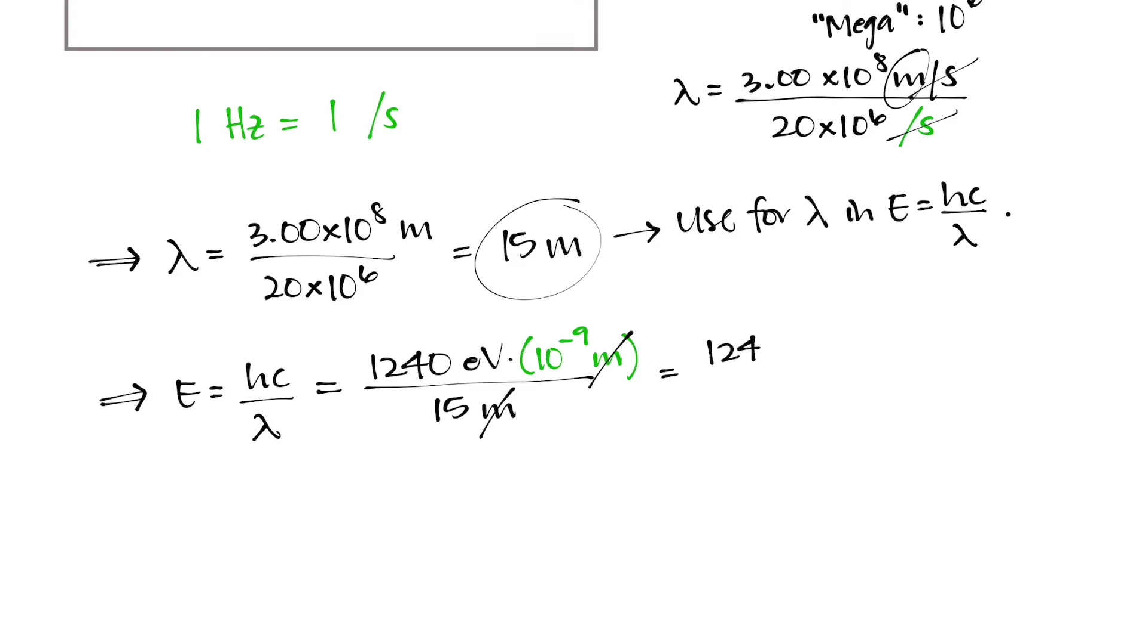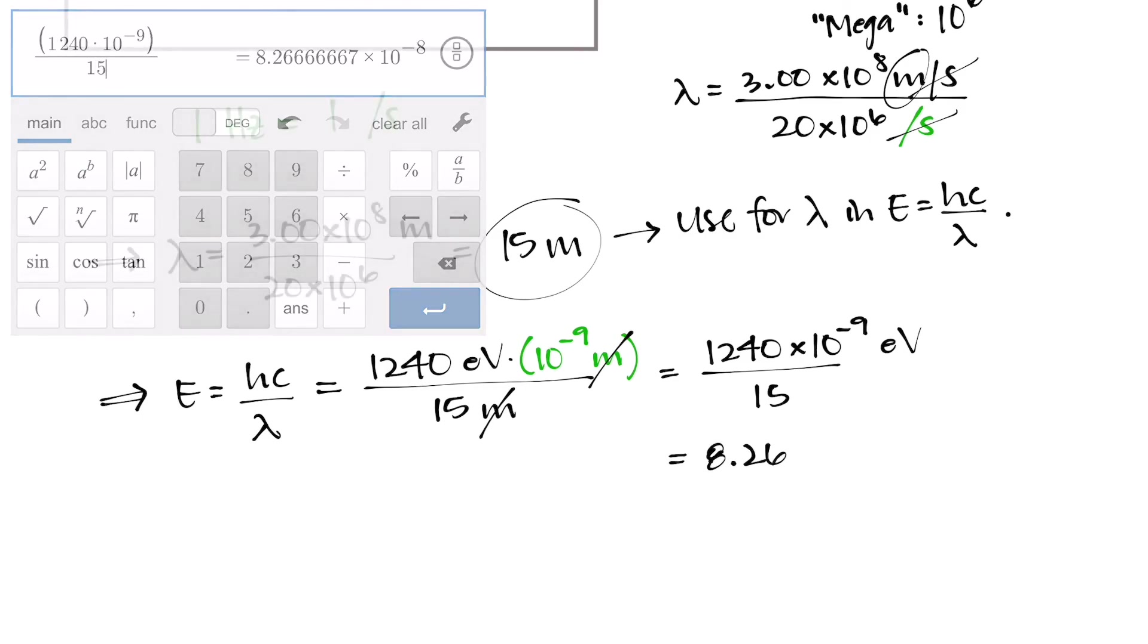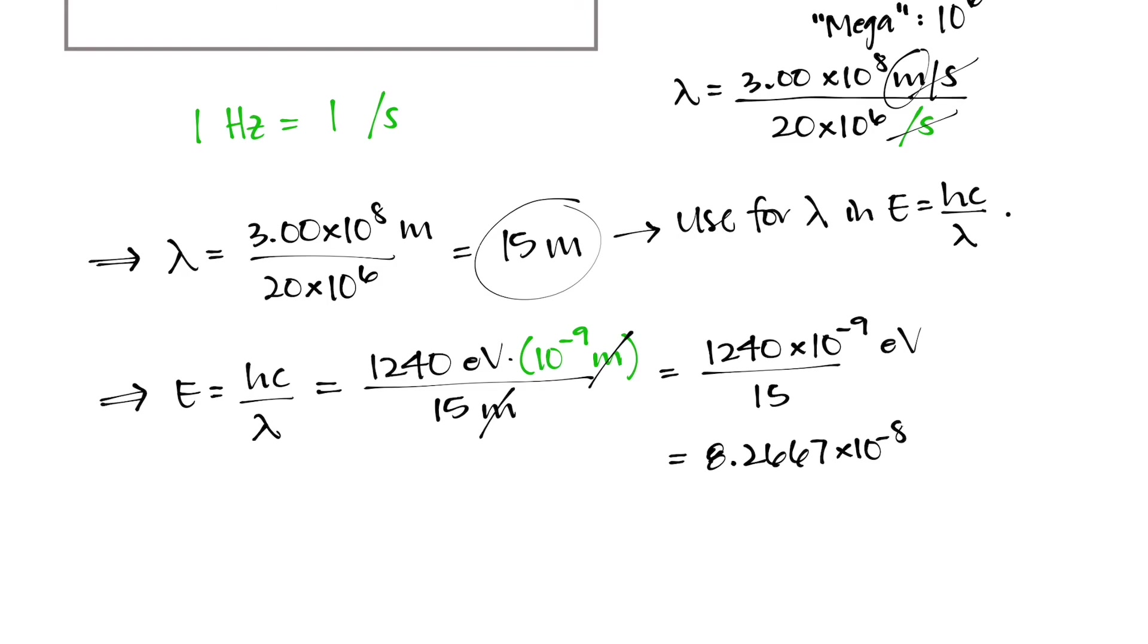So now I'm dealing with 1240 times 10 to the power of negative 9 from the conversion we just did, electron volts divided by 15. So when I divide 1240 times 10 to the power of negative 9 by 15, I get an energy of 8.2666 so many sixes times 10 to the power of negative 8 electron volts.